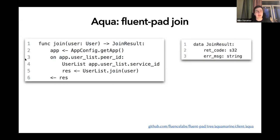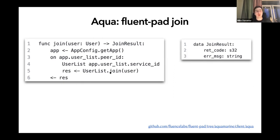Looking at the third line of the script, you can see the 'on' operator. Similar to Python-like syntax, 'on some_peer_id' means: please run these lines on the peer identified by this string. Execution flow will be transferred to this peer, and on that peer the function 'join' will be called. The first line is an alias — an alias to a service ID for user_list — and this function will return a join result.